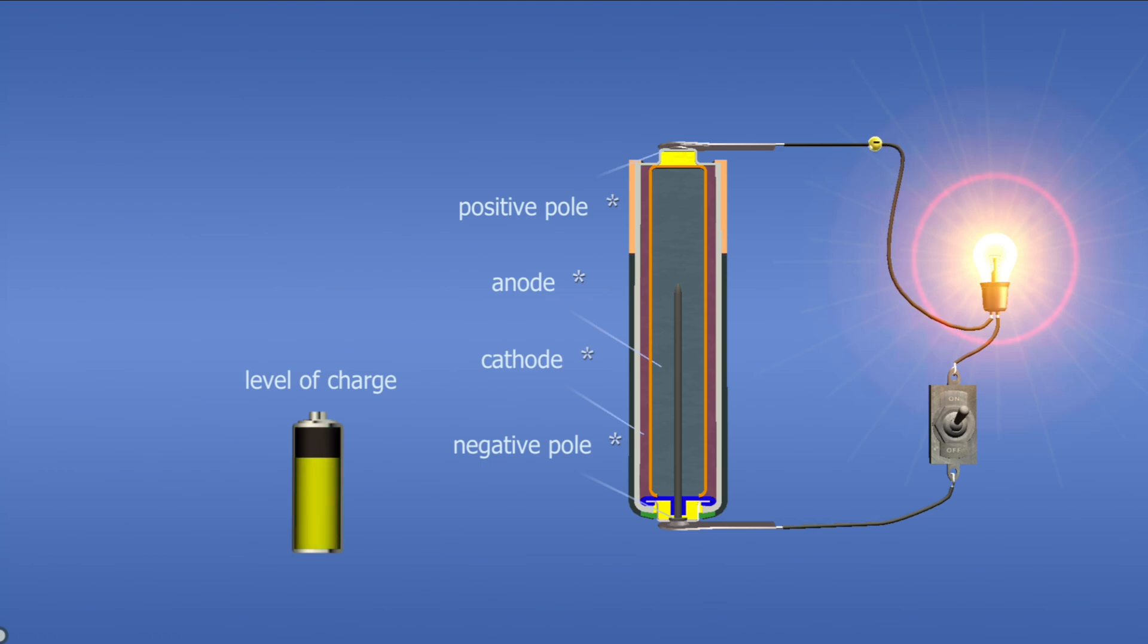Meanwhile, they power whatever device is connected to the circuit. The anode contains powdered zinc and potassium hydroxide.